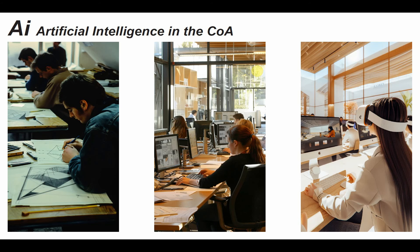I'll leave you with this last slide — it has three AI-generated images. The first is a response to the prompt 'Architecture Office in the early 90s.' The second is 'Architecture Office in the 2010s.' And the last is 'Architecture Office in the 2030s.' Let's continue this discussion in the comments. Please share your thoughts.